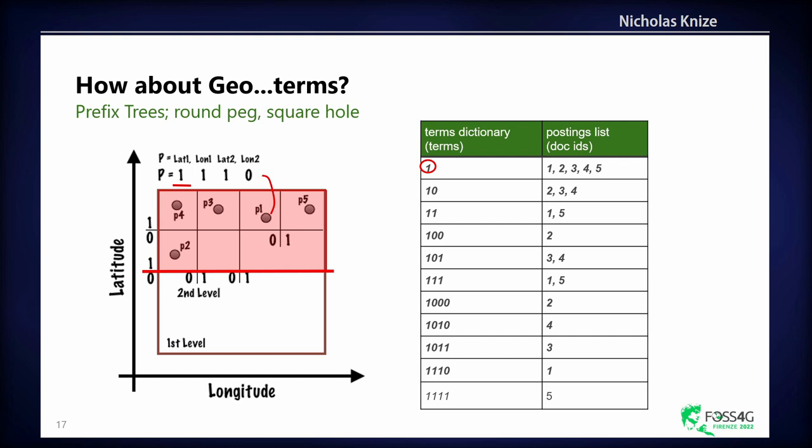How do geohashes work? You split along the y-axis for the first bit, x-axis for the second bit, then recurse y, x, y, x, y, x. That's bit interleaved. When you split across the y-axis, one becomes the northern hemisphere, zero is the southern hemisphere. Let's look at this example where we have five documents all in the northern hemisphere. The terms dictionary for one holds all the documents in the postings list. Then we recurse, one one being the upper right, only holds documents one and five. Then one one one also holds one and five. If we split down to one one one zero, we get down to point one.